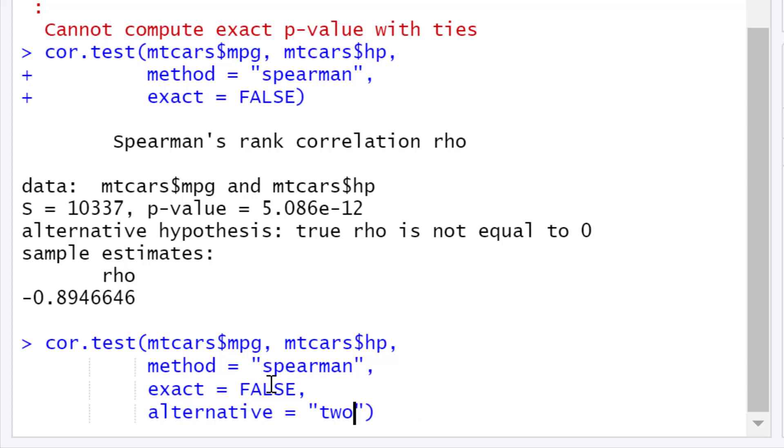Or you can change this to be greater if you want to run an alternative hypothesis that is stating the correlation will be positive, i.e. a correlation coefficient value greater than zero. Or you can change this to be less. This would run a test where the alternative hypothesis is stating that the correlation is going to be a negative correlation, i.e. less than zero.